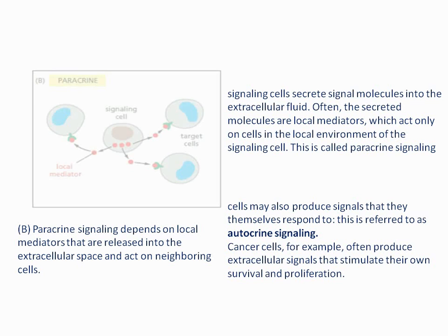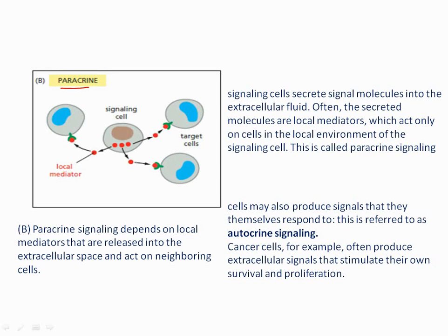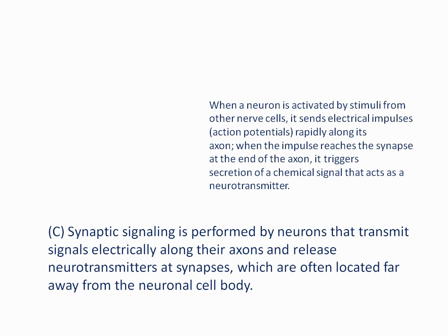The second type is paracrine signaling, which depends upon local mediators that act on neighboring cells. If the signal is produced by the same cell and the response is also by the same cell, it is called autocrine signaling. Cancer cells are one example of autocrine signaling.